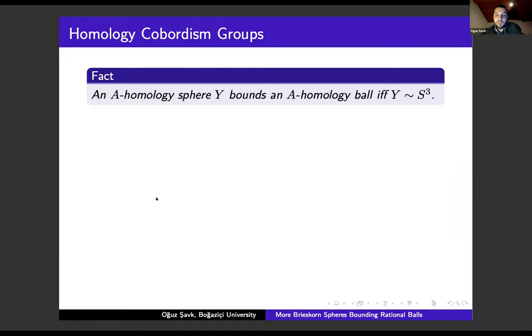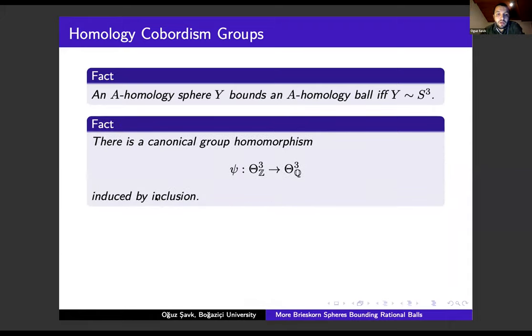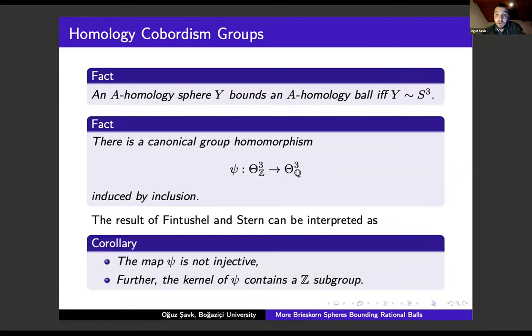An A-homology sphere Y bounds an A-homology ball if and only if Y is homology cobordant to the three-dimensional sphere. Since the integers are a subgroup of rationals, there is a canonical group homomorphism ψ from the integral homology cobordism group to the rational homology cobordism group. The result of Fintushel and Stern can be interpreted as this map is not injective because we found a non-trivial element in the kernel. Further, the kernel of ψ contains a Z subgroup generated by the Brieskorn sphere Σ(2,3,7).